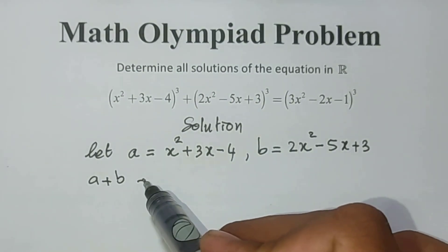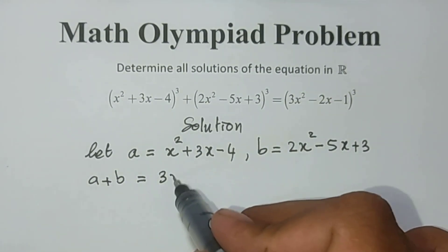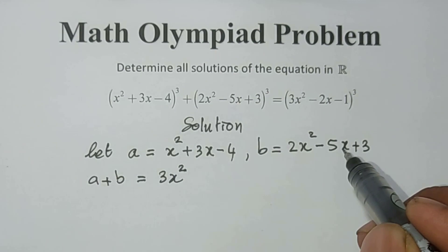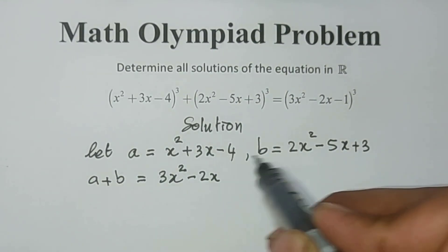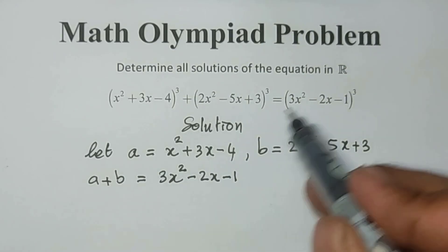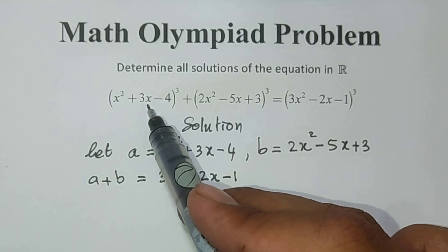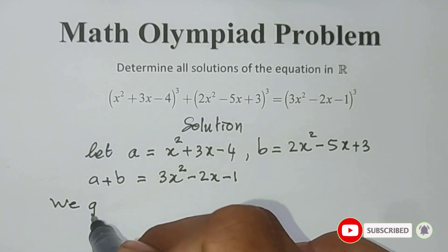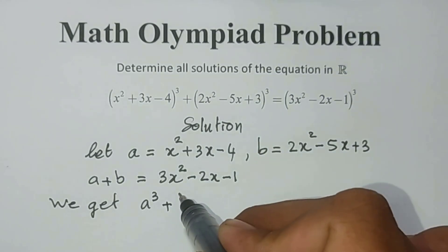A plus B equals (x² + 2x²) + (3x - 5x) + (-4 + 3) = 3x² - 2x - 1. You can see this is the same as the right-hand side, so we replace it by A + B. Our equation becomes A³ + B³ = (A + B)³.